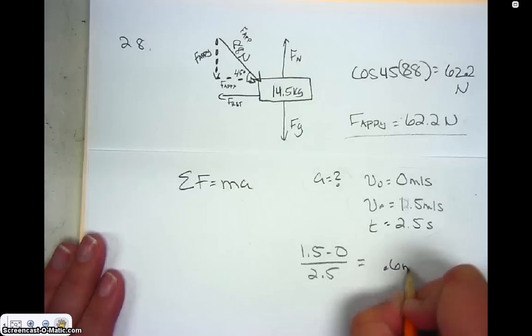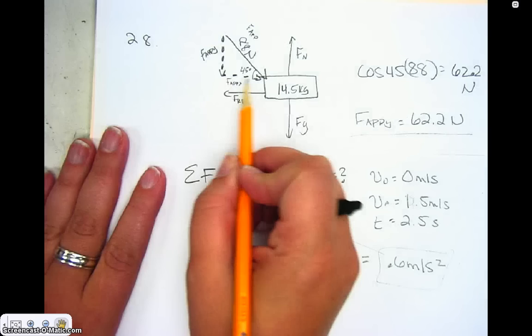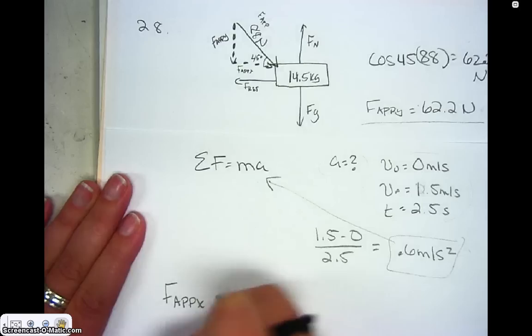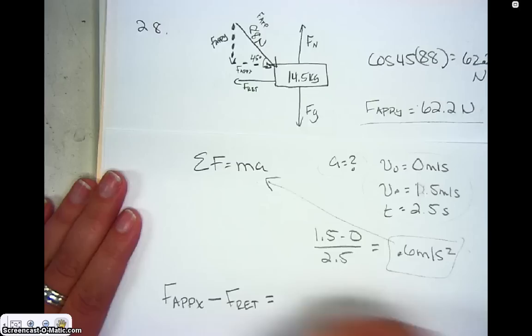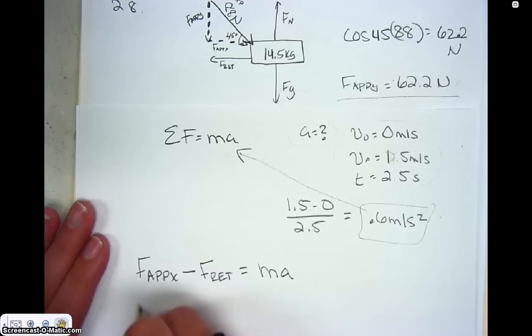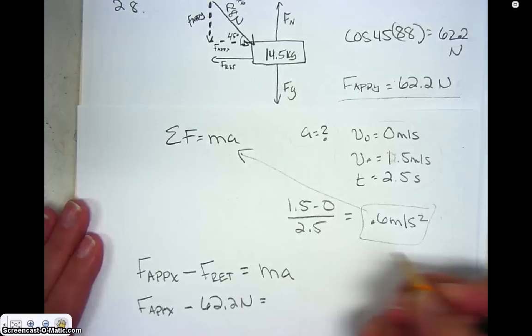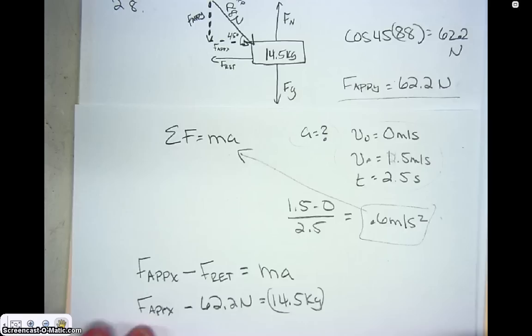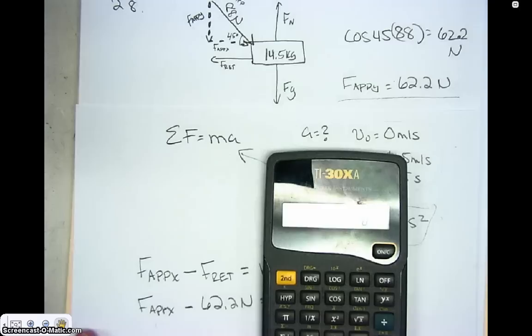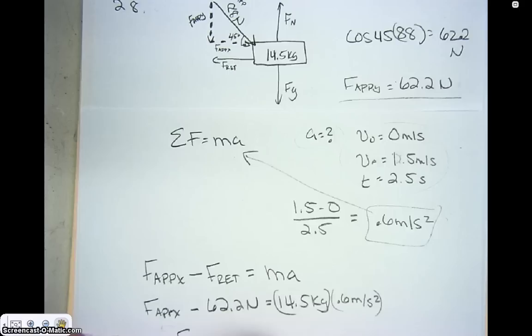Now I write the sum of all forces: force applied in the x direction minus the retarding force equals mass times acceleration. Plugging in: F applied x minus 62.2 newtons equals 14.5 kilograms times 0.6 meters per second squared. So 14.5 times 0.6 plus 62.2 gives me the force applied in the x direction equal to 70.1 newtons. However, this doesn't answer our question — it asks for the force applied into the handle.